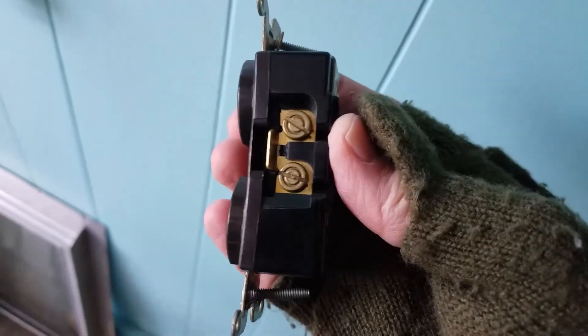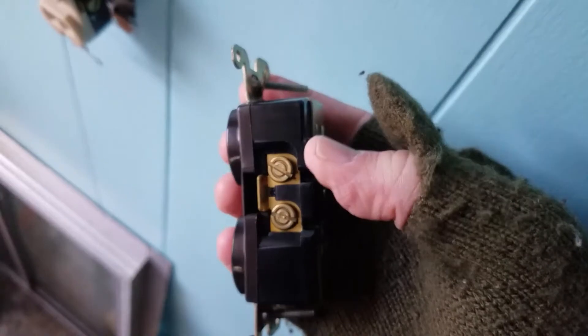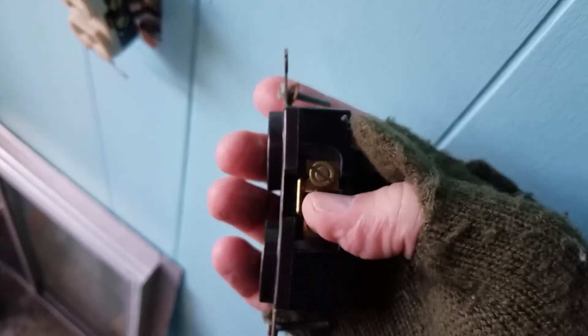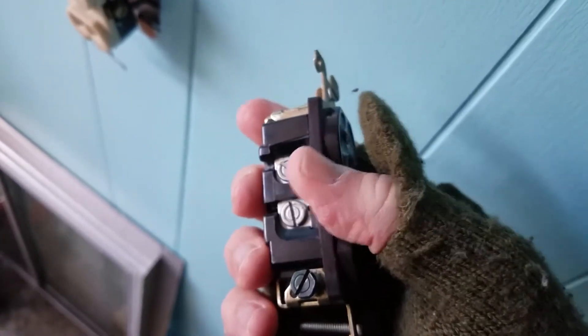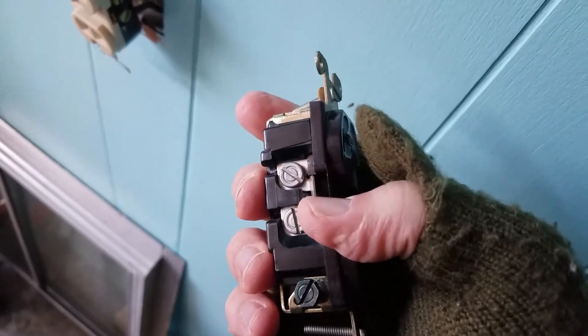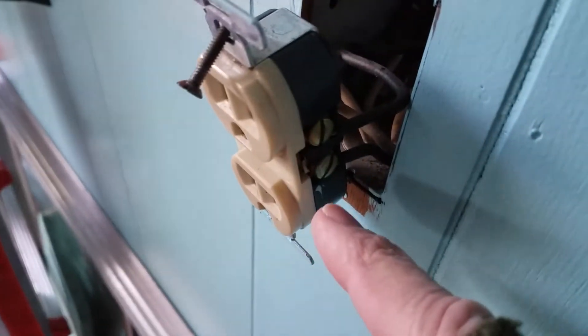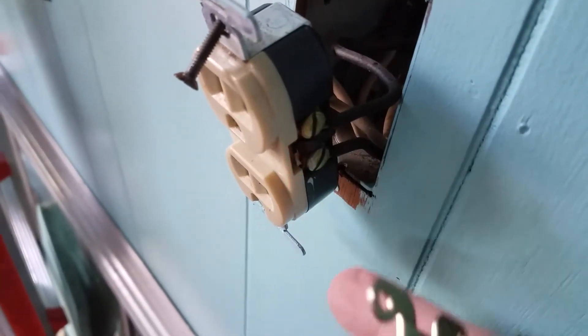For those of you who want to know how to install this, the brass looking contacts take the black leads, that's the load side. And the white or silver side is the neutral side, which is your white cables.